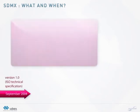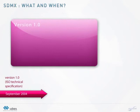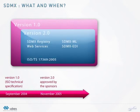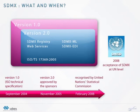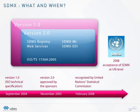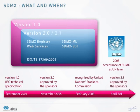SDMX stands for Statistical Data and Metadata Exchange. Version 1.0 was released in September 2004 and was approved as an ESO technical specification. Version 2.0 was approved in November 2005 by the sponsors. The acceptance of SDMX at UN level is a major step forward towards a broad use of SDMX at worldwide level. Version 2.1 was approved in April 2011 by the sponsors.